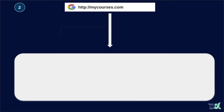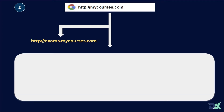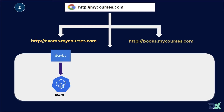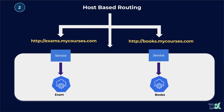The second case involves subdomains inside mycourses.com. For example, exams.mycourses.com will be a different deployment with its associated service targeting it. Similarly, books.mycourses.com will also be a different deployment with its own service. We call this host-based routing — multiple hosts or subdomains each have different pages, different deployments, and associated services targeting them.